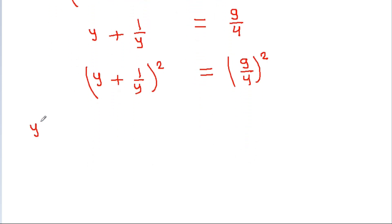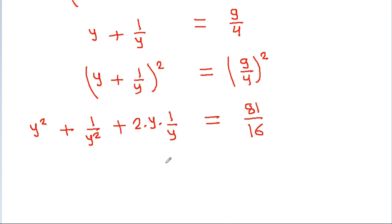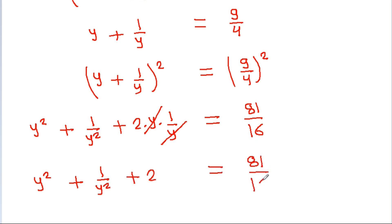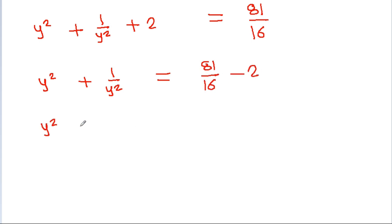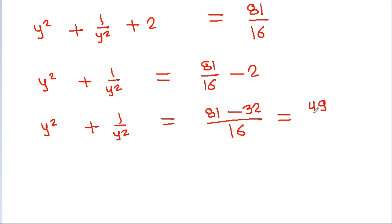Expanding the left side: y squared plus 1 by y squared plus 2 times y times 1 by y equals 81 by 16. Since y times 1 by y cancels to 1, we get y squared plus 1 by y squared plus 2 equals 81 by 16. Therefore y squared plus 1 by y squared equals 81 by 16 minus 2, which is 81 minus 32 by 16, giving us 49 by 16.